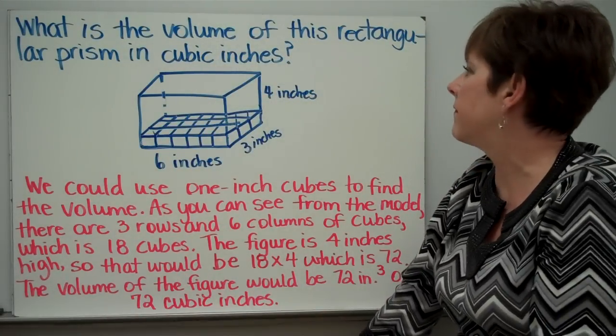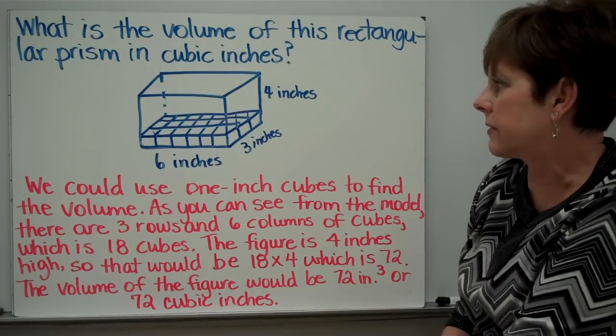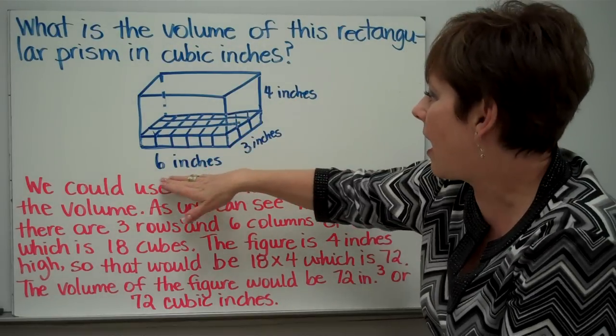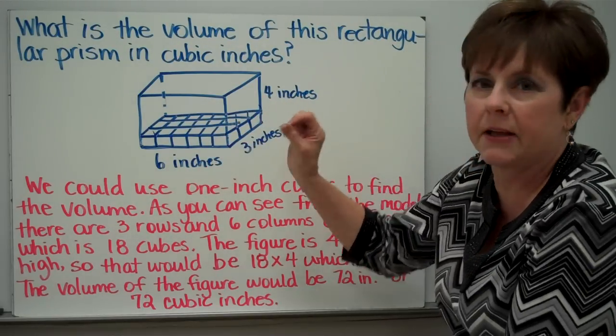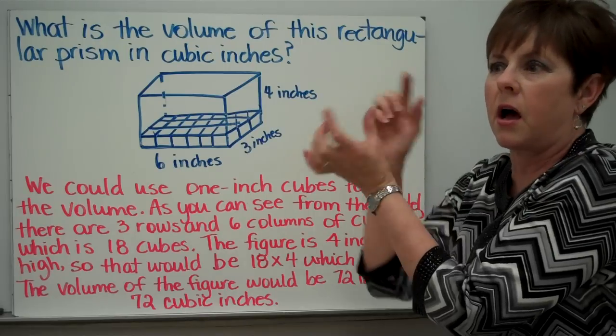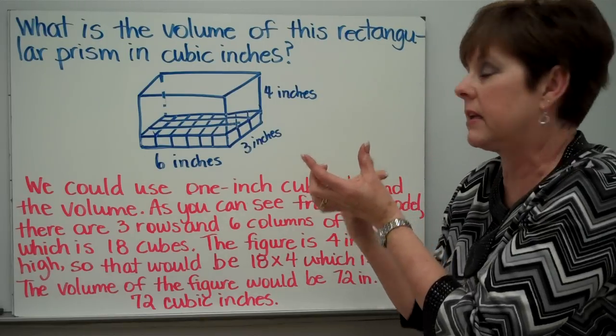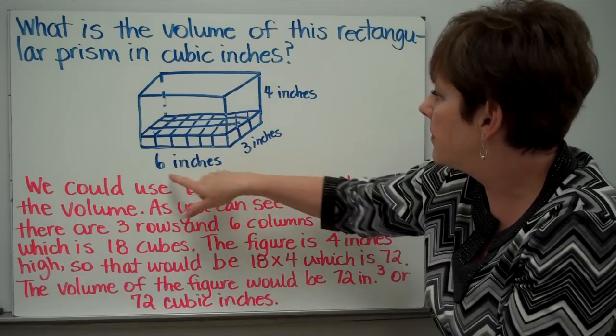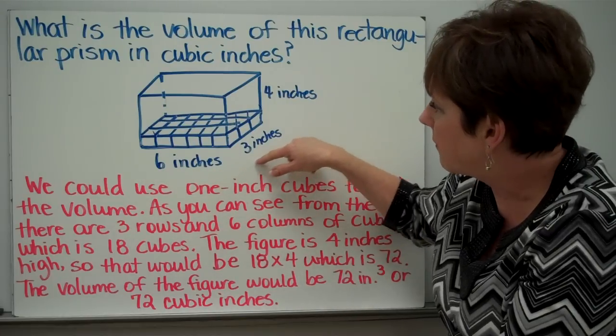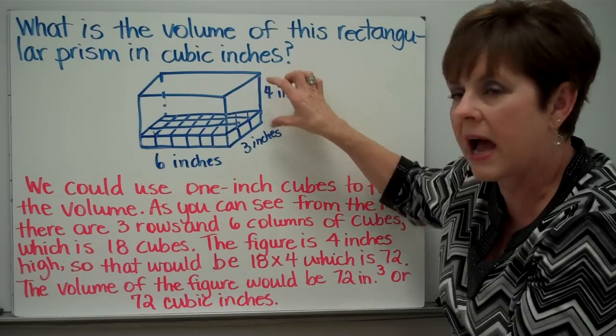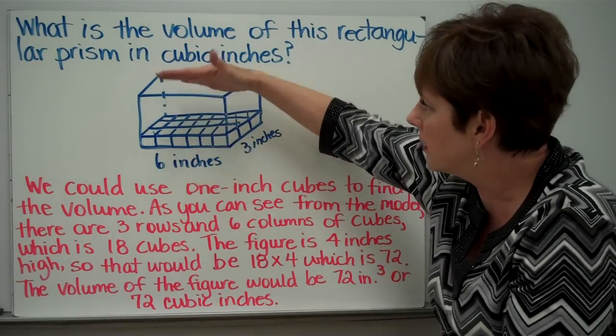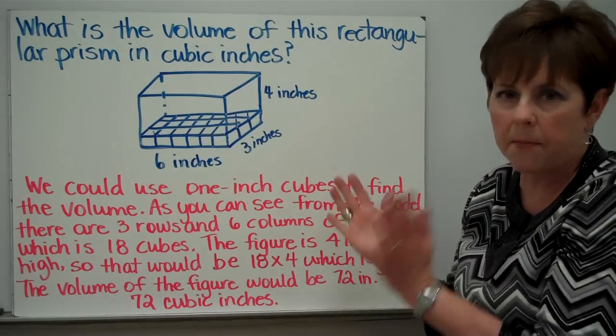What is the volume of this rectangular prism in cubic inches? I've drawn little cubes here, and they would be cubic inch size. They would be cubed an inch in width, an inch in length, an inch in height. This has a length of six inches, a width of three inches, and a height of four inches.